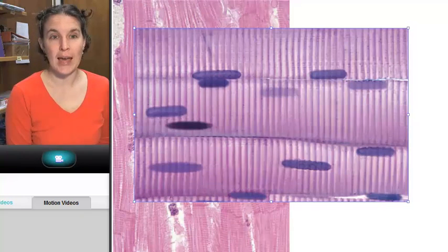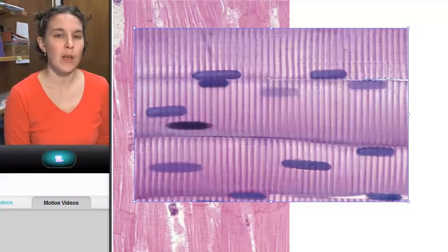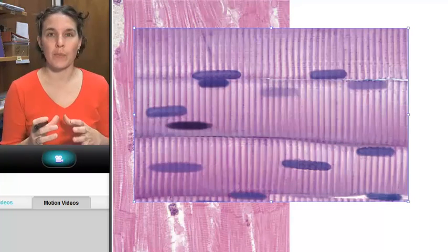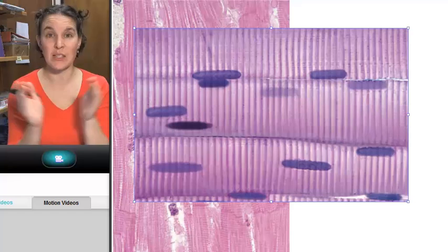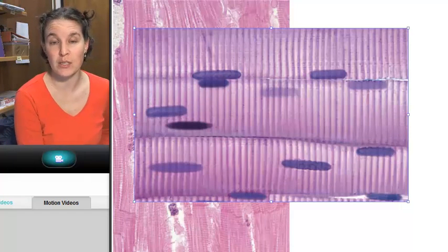Let's take a closer look at the histology of cardiac muscle tissue. Remember, muscle tissue is contractile, so there are going to be some similarities with skeletal muscle that we've already looked at.